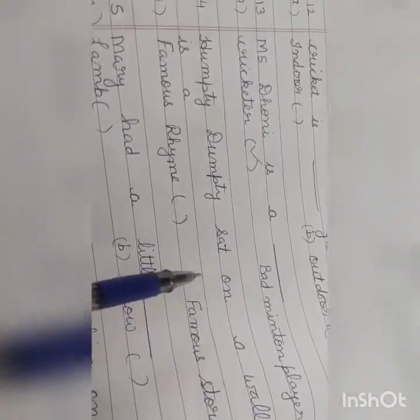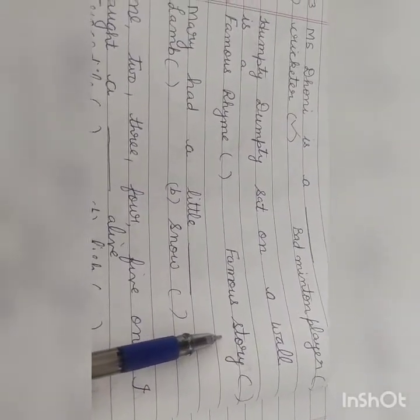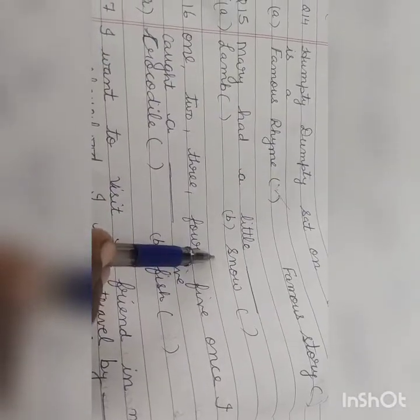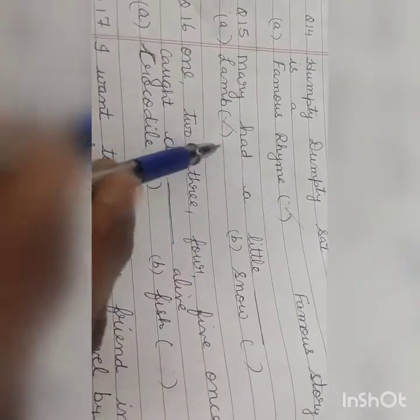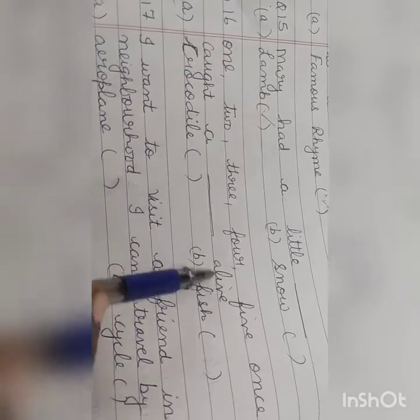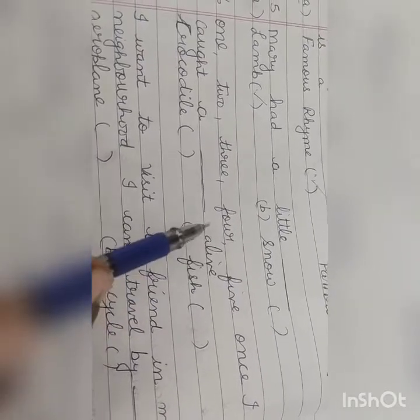Now see the next one. Humpty Dumpty sat on a wall. सबने सुनी है न ये poem? Is a famous rhyme के famous story? Rhyme, yes, poem. So put a tick mark on rhyme. See the fifteenth one. Mary had a little dash. Mary had a little lamb. So put a tick mark on lamb. See the next one. One, two, three, four, five. Once I caught a dash alive. Crocodile के fish? Once I caught a fish alive. So put a tick mark on fish.